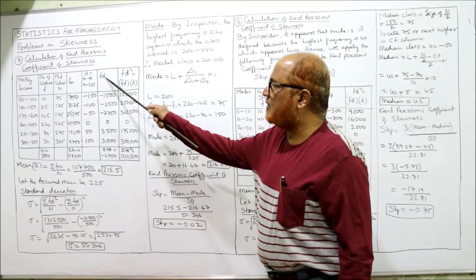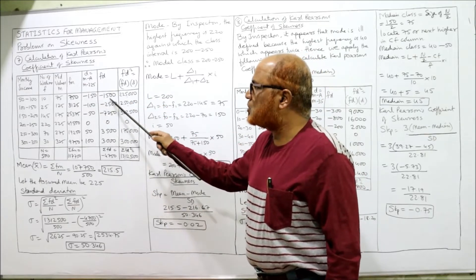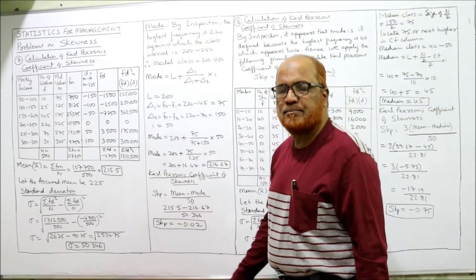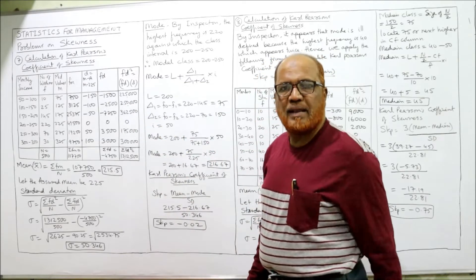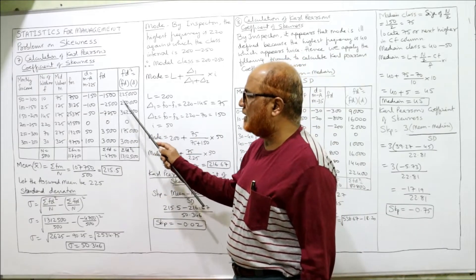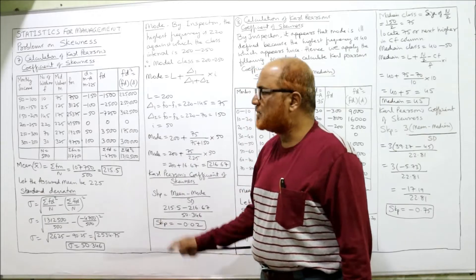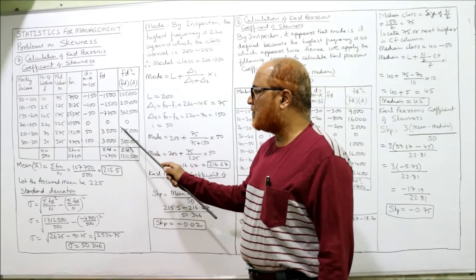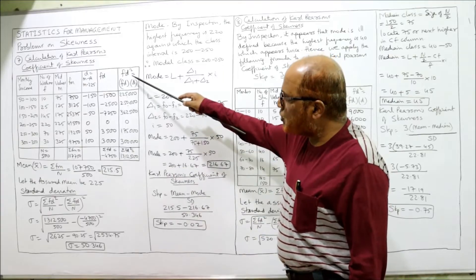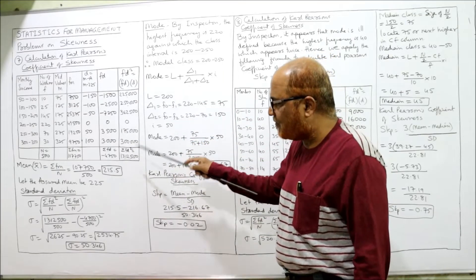FD² means FD × d. Multiply the FD column by the d column: −1500 × −150 = 2,25,000; −2500 × −100 = 2,50,000; −7250 × −50 = 3,62,500; 0 × 0 = 0; 3500 × 50 = 1,75,000; 3000 × 100 = 3,00,000. The total of ΣFD² comes to 13,12,500.